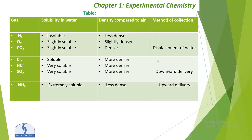The table summarizes which gases are soluble or insoluble and their collection method. Hydrogen is insoluble and less dense — collected by displacement of water. Oxygen is slightly soluble and slightly denser — also displacement of water. Carbon dioxide is slightly soluble and denser — displacement of water. Chlorine, hydrochloric acid, and sulfur dioxide are soluble or very soluble and denser than air — collected by downward delivery. Ammonia is extremely soluble and less dense — collected by upward delivery. You must memorize this table.